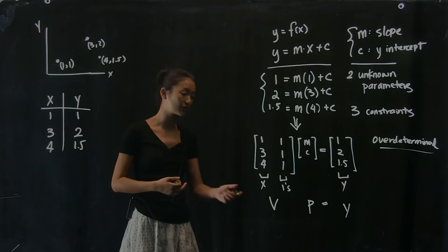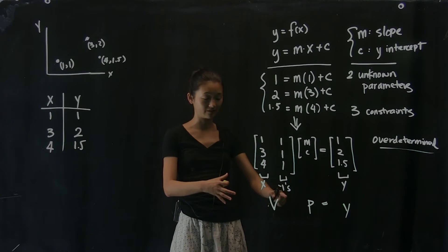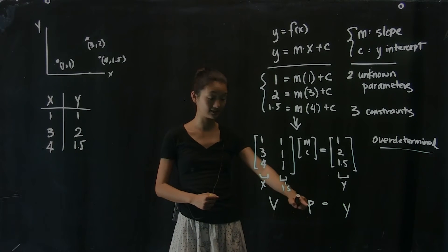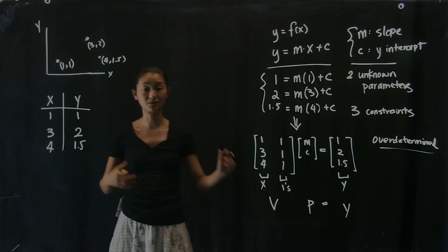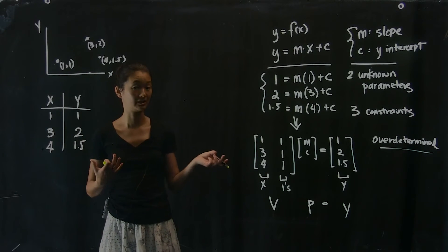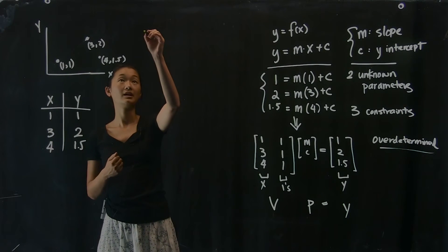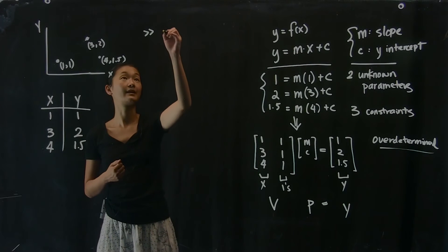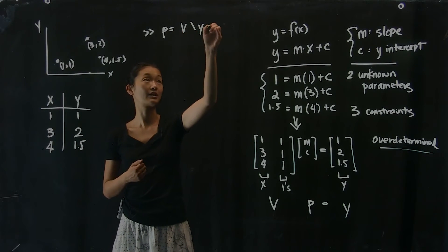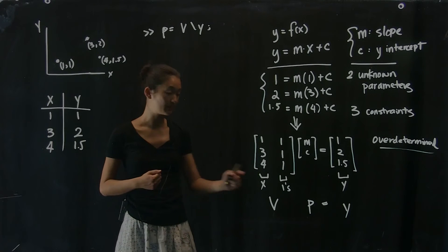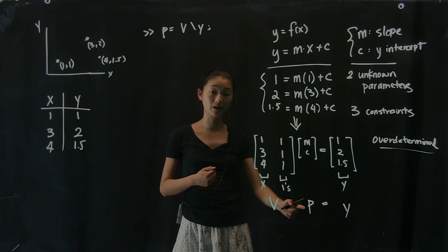And in order to solve this equation, no matter how large V and Y are, P is the same size. And to solve it, we're going to do exactly the same operation computationally as we did before with two points. So we're going to say that P equals V backslash Y. So P is a 2 by 1 vector.